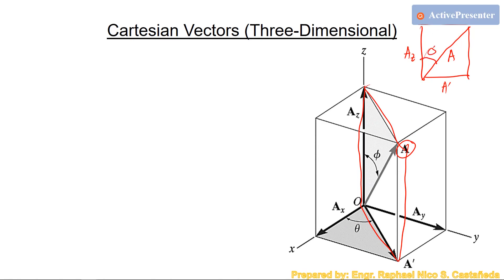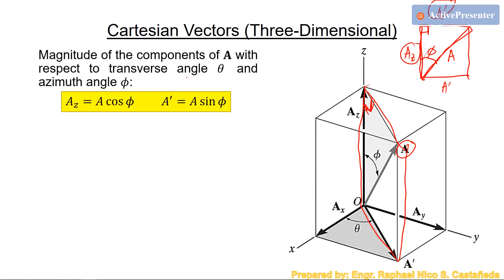So this angle is phi, and this side is a_prime, and the angle here is 90 degrees. To calculate az and a_prime, you use this right triangle. Cosine of phi equals az over a, and sine of phi gives a_prime over a. So the formulas are: az equals a·cosine(phi) and a_prime equals a·sine(phi).